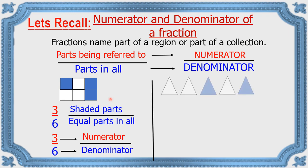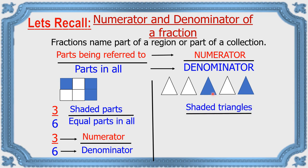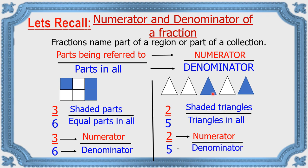Here we can see that in this rectangle, we have divided it into six parts; out of it, three parts are shaded. So the numerator is three — the shaded parts — and the denominator is six — the equal parts in all. For the collection of five triangles with two shaded, the fraction is two-fifths: two is the numerator and five is the denominator.